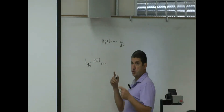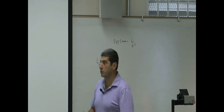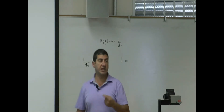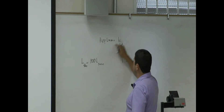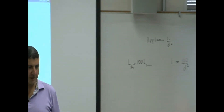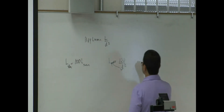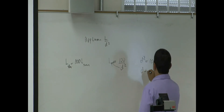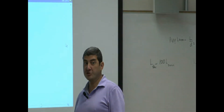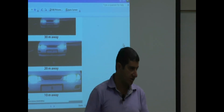We want the apparent luminosity of that other star to appear just as bright as the sun appears now, so the apparent luminosity stays the same. Setting apparent luminosity equal to 1 and the actual luminosity equal to 100, we solve: 1 = 100 / D², so D² = 100, D = √100 = 10 AUs. So if you discover a star 100 times brighter than the sun, place the Earth 10 AUs away from that star and the temperatures will be similar.